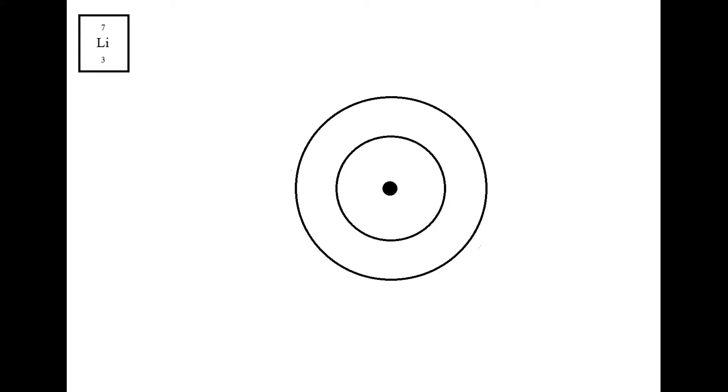We're going to use this periodic table square first of all to figure out how many protons, electrons and neutrons this atom has. As you hopefully know, the number of protons is given by the atomic number. In AQA GCSE chemistry, this will always be at the bottom of the square. So as we can see, here it says that the atomic number of lithium is three, so we know that lithium has got three protons.